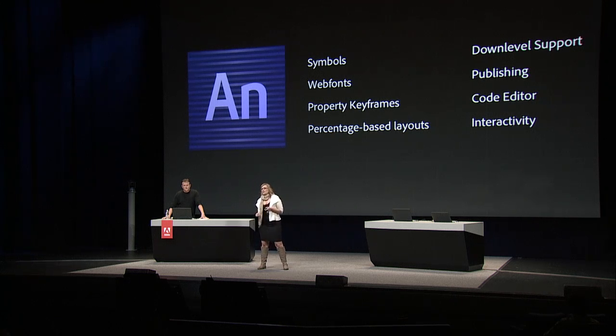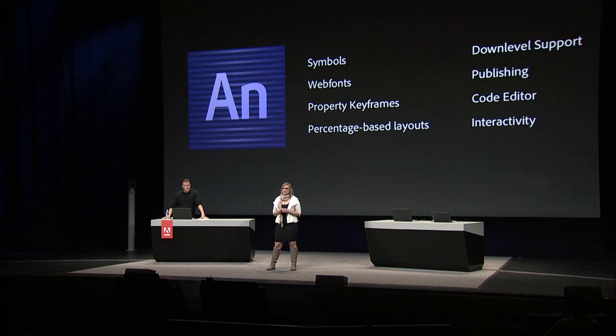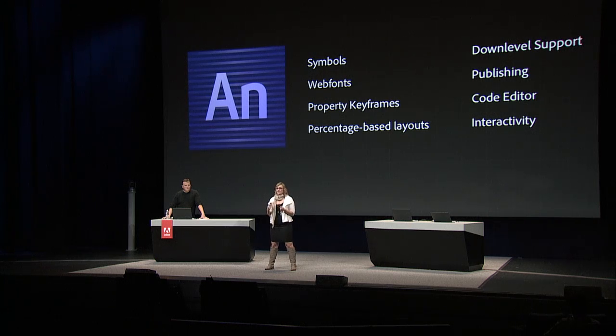There is also down-level support for older browsers. You can use Google Chrome Frame to target IE 6, 7, and 8, or use a down-level stage where you can bring in content and add links — a static version for older browsers. There's a code editor to edit all the code used in Edge Animate. Interactivity is available using native Animate APIs, and since it works with JavaScript you can assign your own code. The same concepts of triggers, labels, and actions that you'd find in other scripting tools are available in Animate.